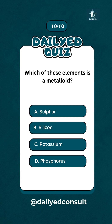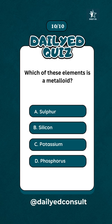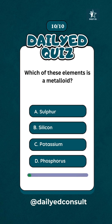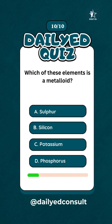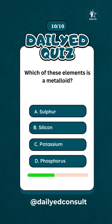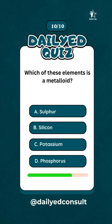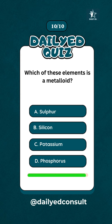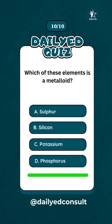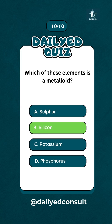Which of these elements is a metalloid? Silicon.